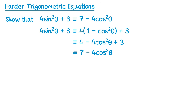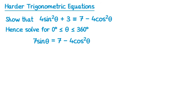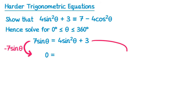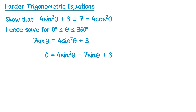Sometimes this is part A of a question, with a follow-up part B asking you to hence solve an equation. Looking carefully at the equation to solve and comparing it to the identity, the right hand sides are the same. So we can replace the right hand side of the equation — 7 minus 4 cos squared theta — with the left hand side of the identity: 4 sin squared theta plus 3. Now the equation only has sines. Getting all terms on the right by subtracting 7 sin theta from both sides gives 0 on the left and 4 sin squared theta minus 7 sin theta plus 3 on the right. This is a quadratic that factorises as 4 sin theta minus 3, times sin theta minus 1.